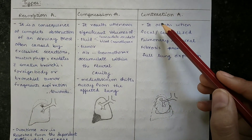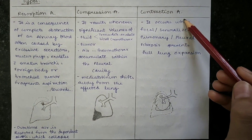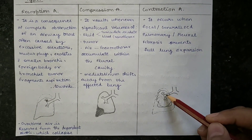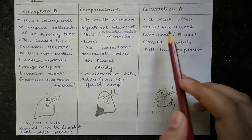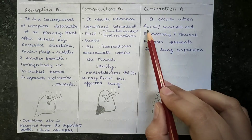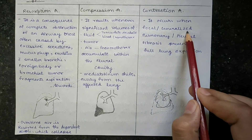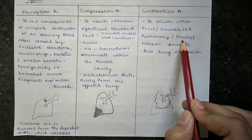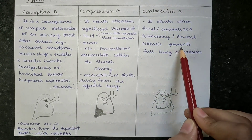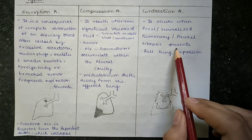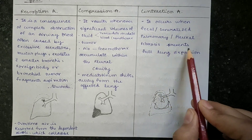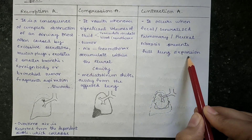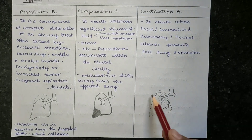Contraction atelectasis occurs when focal or generalized pulmonary or pleural fibrosis occurs and prevents full lung expansion.